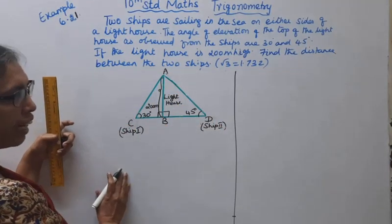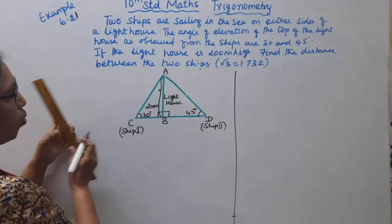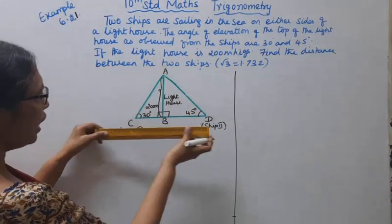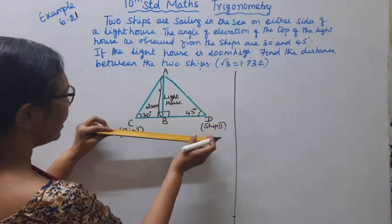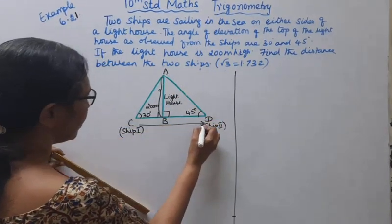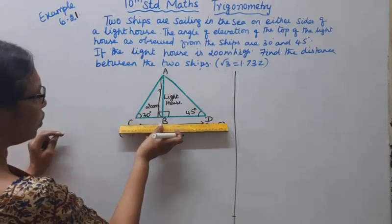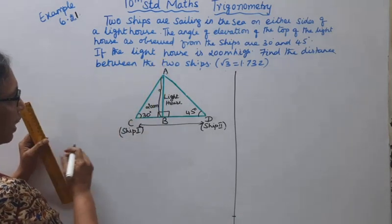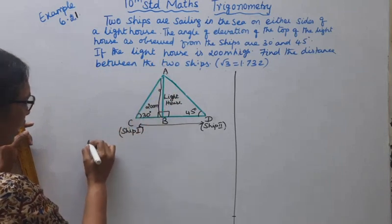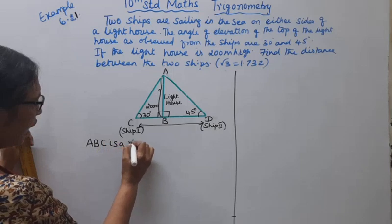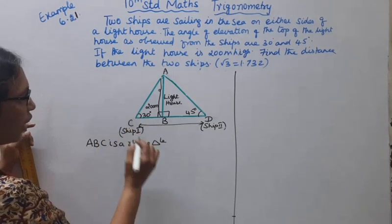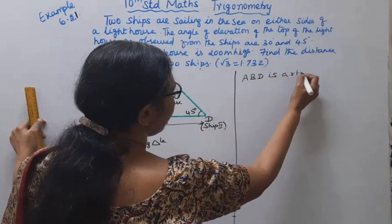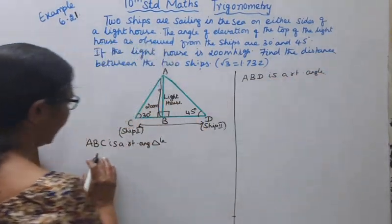We have two right-angle triangles. Triangle ABC is a right-angle triangle, and triangle ABD is a right-angle triangle. We need to find the distance between the two ships C and D.